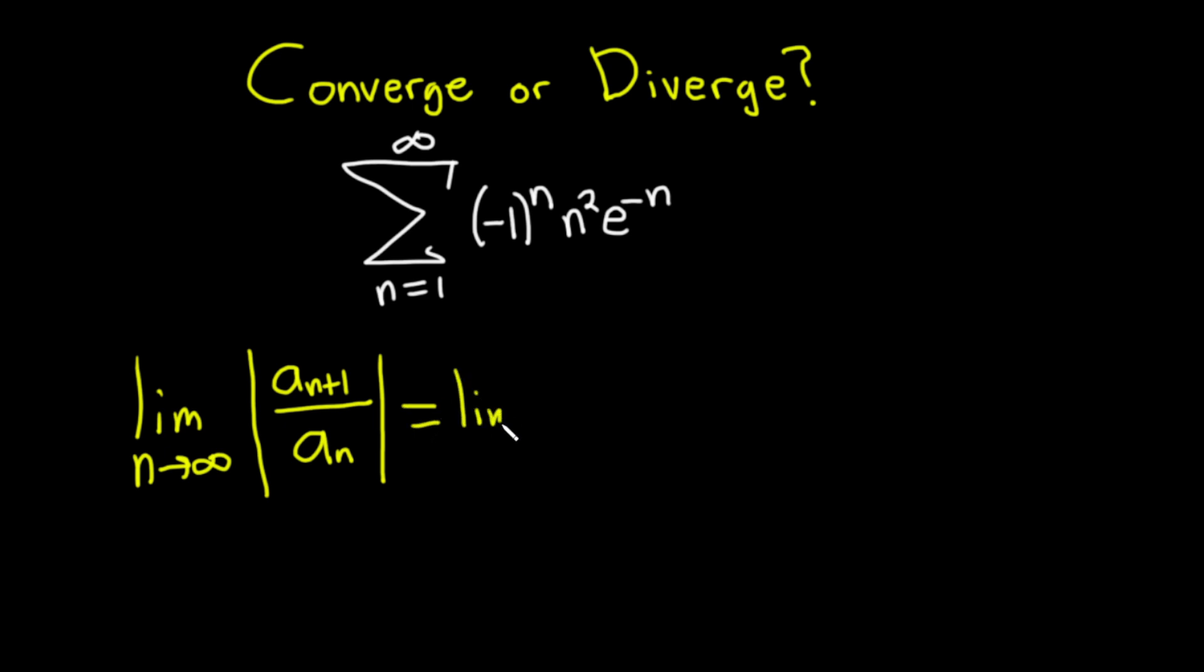This equals the limit as n approaches infinity. So for a_{n+1}, I'm going to replace all the n's with (n+1)'s. We have absolute value of (-1)^(n+1), and then this n here is also now (n+1), and this one over here is also (n+1).